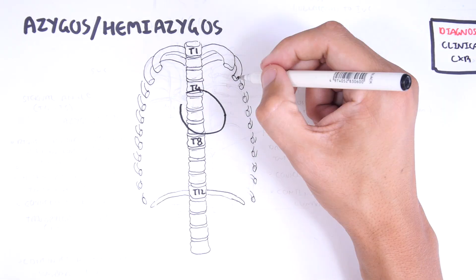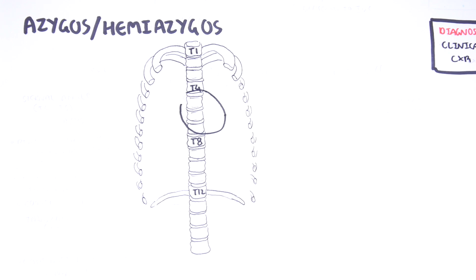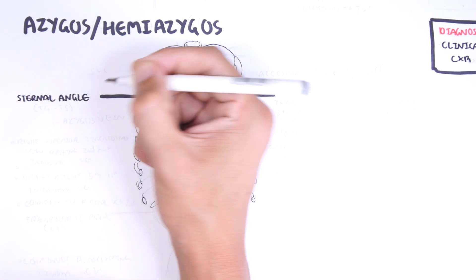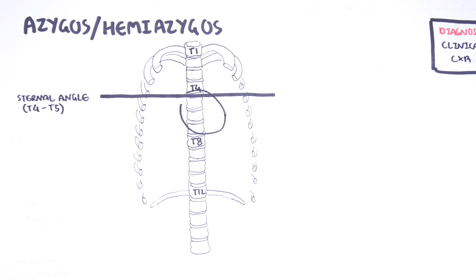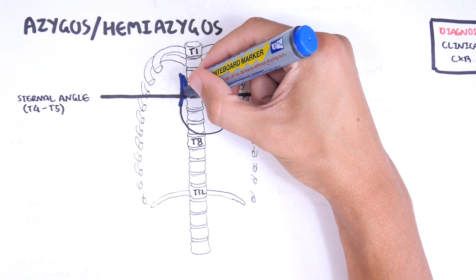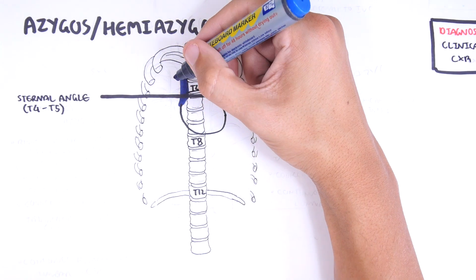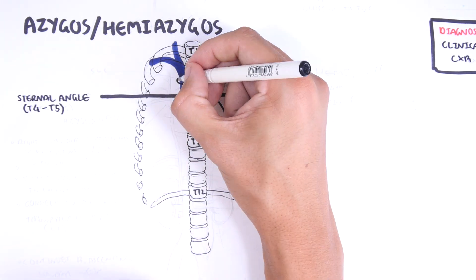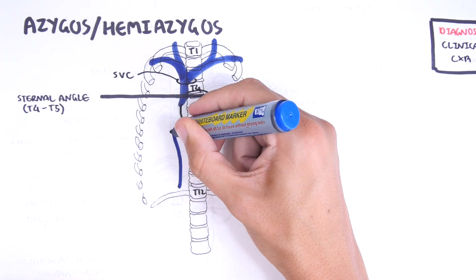Here are the 12 thoracic vertebrae and the heart. The sternal angle is an imaginary line that crosses the T4 to T5 vertebral level. Here is the superior vena cava, which enters the right atrium. The azygos vein drains into the superior vena cava.